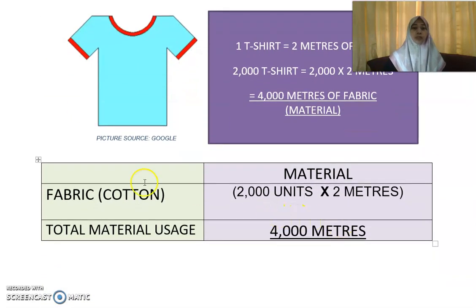So that will be the fabric that you need: 2,000 units times 2 meters, that will be 4,000 meters. That is your total material usage. As simple as that.